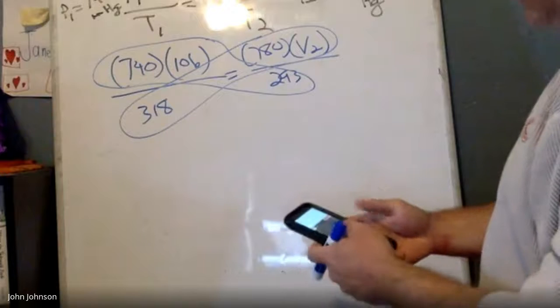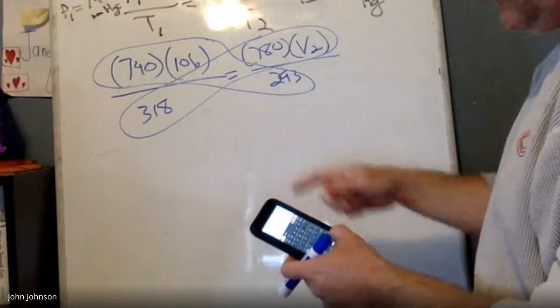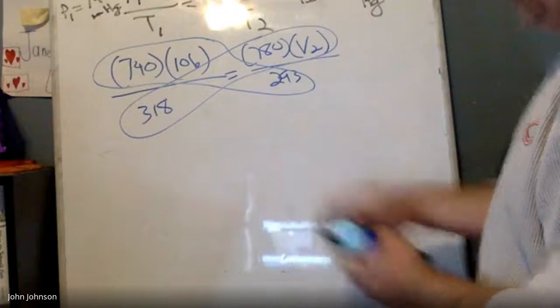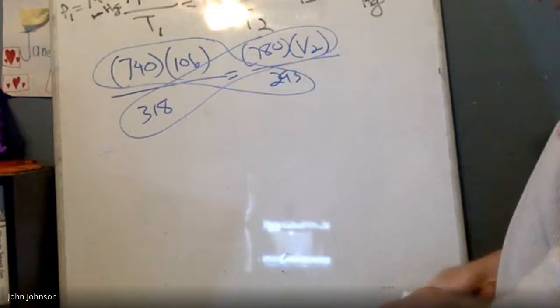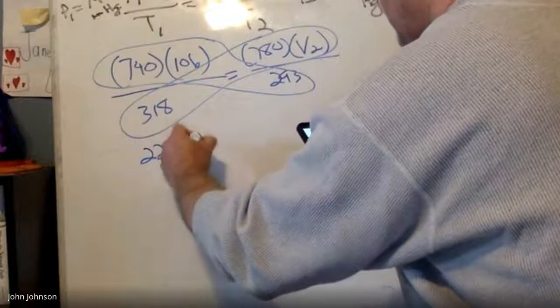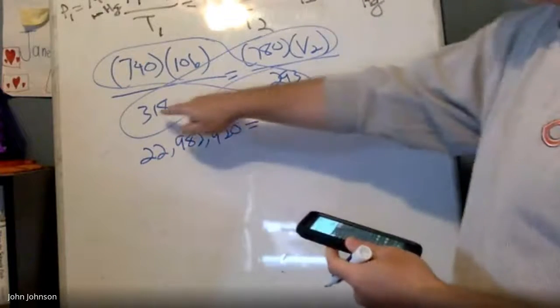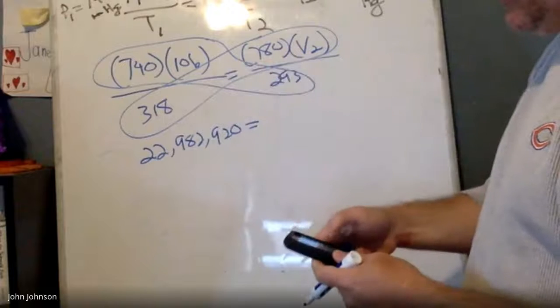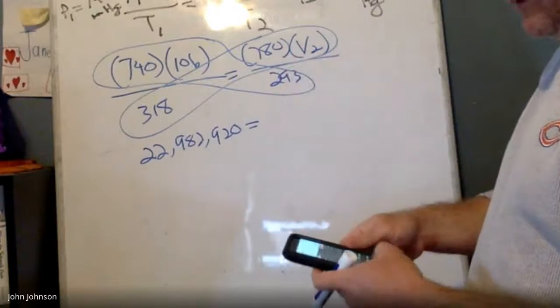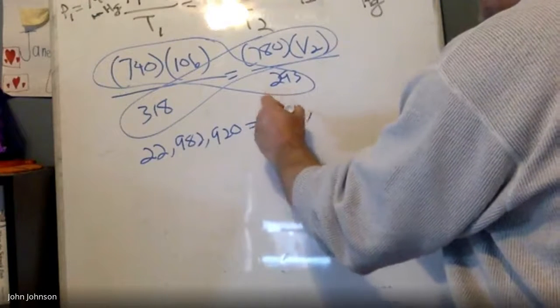I take 740 times 106 times 293, and that's a really big number but I'm going to write down the whole thing. It's 22,982,920. And that's going to equal, I'm going to take 318 times 780 and I get 248,040 times V2.